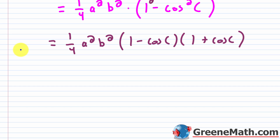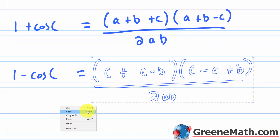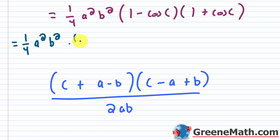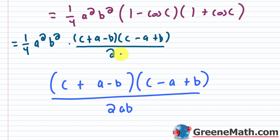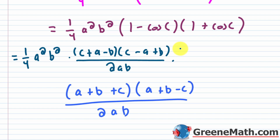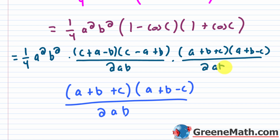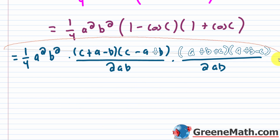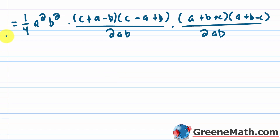Now we substitute back into area squared equals one fourth times A squared times B squared times (1 minus cosine C) times (1 plus cosine C). Plugging in, we get one fourth times A squared times B squared, times the quantity (C plus A minus B)(C minus A plus B) over 2AB, times the quantity (A plus B plus C)(A plus B minus C) over 2AB. This is all multiplication, so we can cancel A squared with the A squared in the denominator, and B squared with B squared in the denominator.